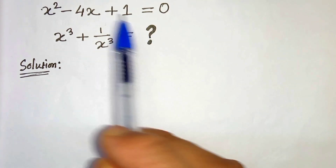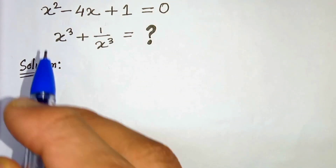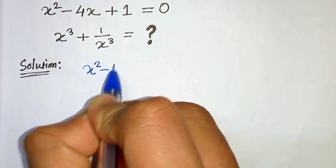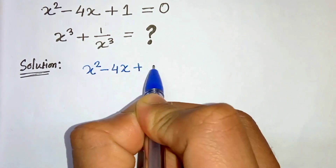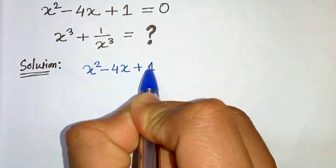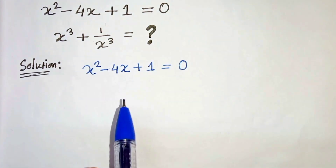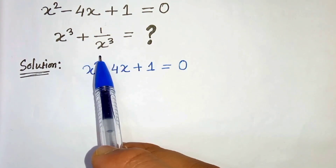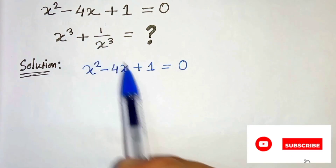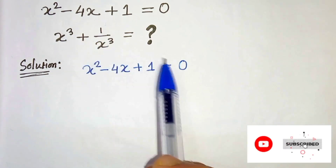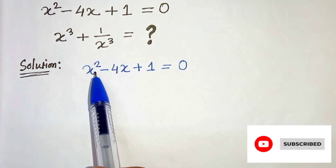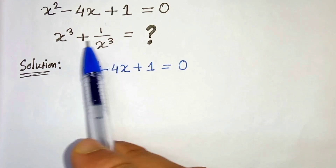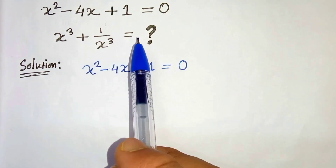So we are given this expression. Let's write this first: x squared minus 4x plus 1 equals 0. We have to find x cubed plus 1 over x cubed. To get this, we could solve the equation, find the value of x, then plug it in to get the answer. But there is another approach which is very simple.